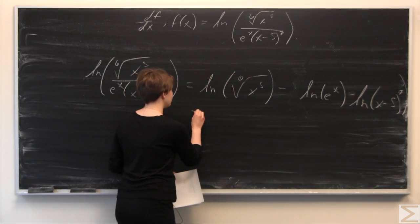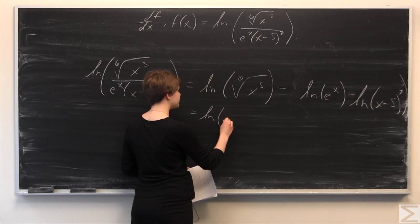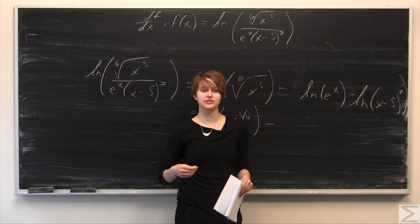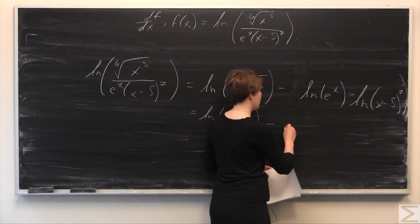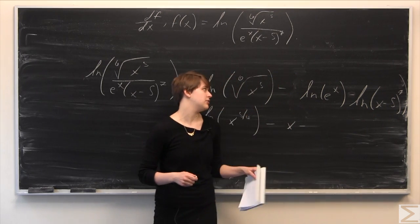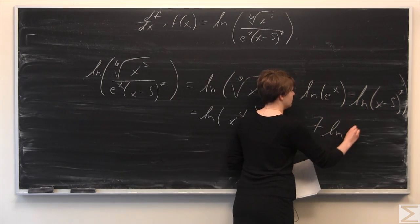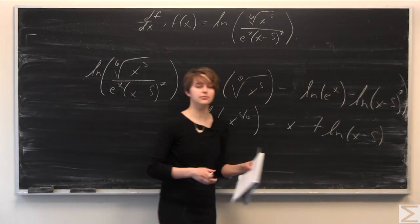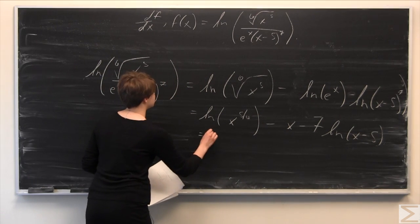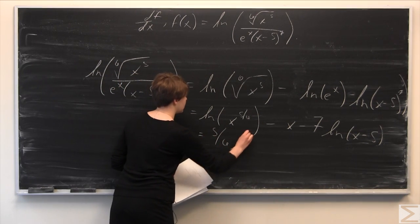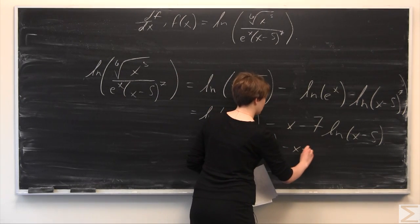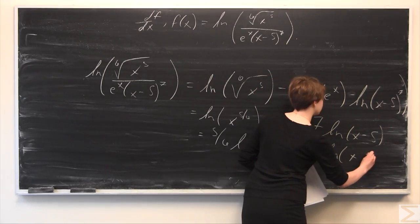We can simplify now. This is going to be equal to ln of x to the five-sixths minus—well, ln of e to the x is just x because the ln and the e cancel out—so minus x, and minus, we have a 7 here so we bring the 7 down in front: 7 ln of x minus 5. That's another handy property of logarithms which we'll use on this as well. We have an exponent of five-sixths there, so this equals five-sixths—we bring that down in front—ln of x, minus x, minus 7 ln of x minus 5.